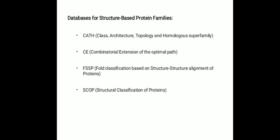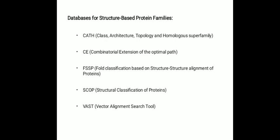SCOP, or Structural Classification of Proteins, uses augmented manual classification: class, fold, superfamily and family classification of proteins. VAST, or Vector Alignment Search Tool, contains representative structure alignments and three-dimensional superposition. Among these five databases, SCOP provides more function-related information.